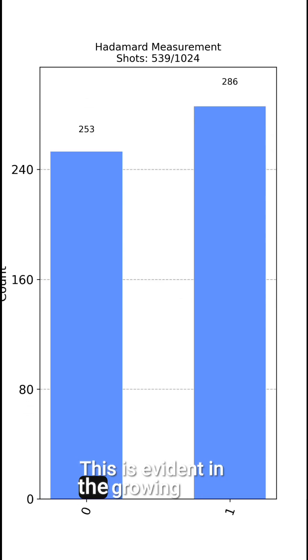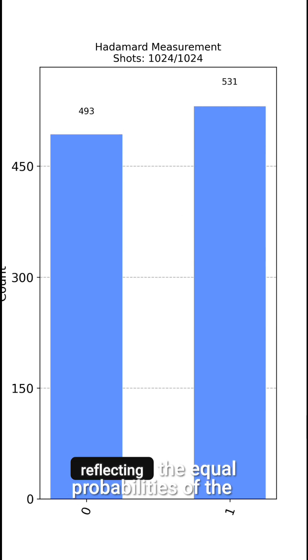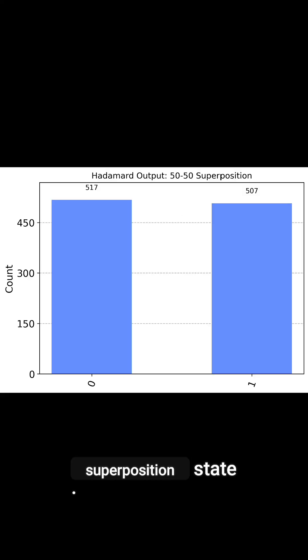This is evident in the growing histogram of measurements, where the two bars steadily rise to equal heights, reflecting the equal probabilities of the superposition state.